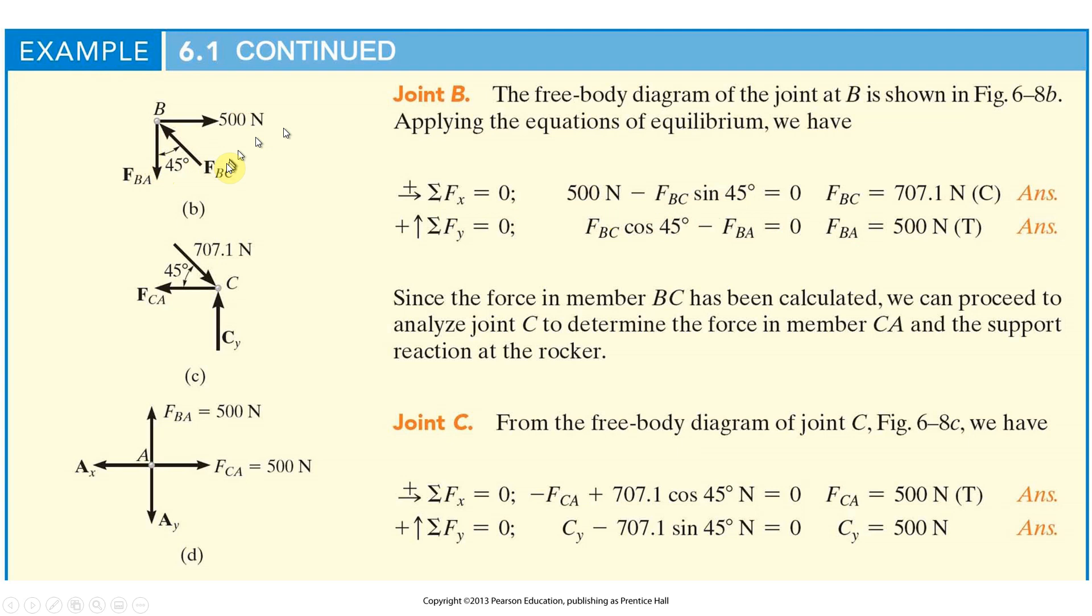That's 707 newtons. Summation of forces in the Y direction, very similar. FBC cosine 45 this time going up, FBA going down which is why it has the negative sign. And that makes FBA equals 500 newtons too.